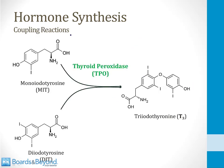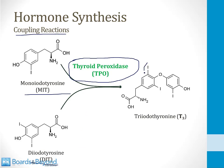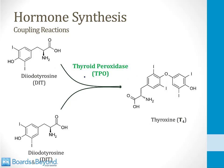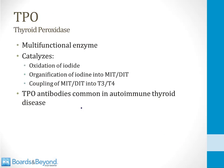After synthesis of MIT and DIT, the next step is to couple those molecules together to make thyroid hormone — also catalyzed by thyroid peroxidase. MIT plus DIT yields a structure with two benzene rings and three iodines, which is triiodothyronine, or T3. Two DIT molecules coupled together yield four iodines, which is thyroxine, or T4. So thyroid peroxidase catalyzes oxidation of iodide, organification into MIT and DIT, and coupling of MIT and DIT into T3 and T4. Antibodies to TPO are common in autoimmune thyroid diseases.